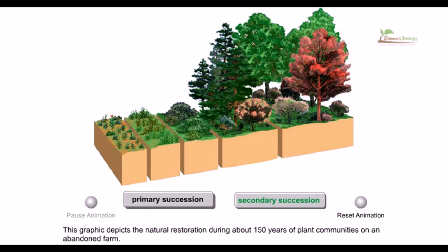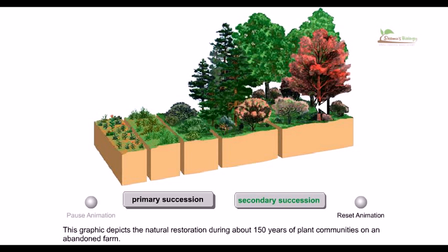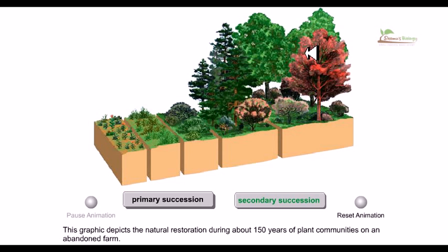In secondary succession, it is simply the restoration of plant vegetation. Soil is still present, so smaller trees can grow at different times, then larger trees, and finally the largest trees grow tall by taking up nutrients from the soil. They uptake energy from the sun, grow larger, and the smaller plants start to die as the larger ones take over the whole community.